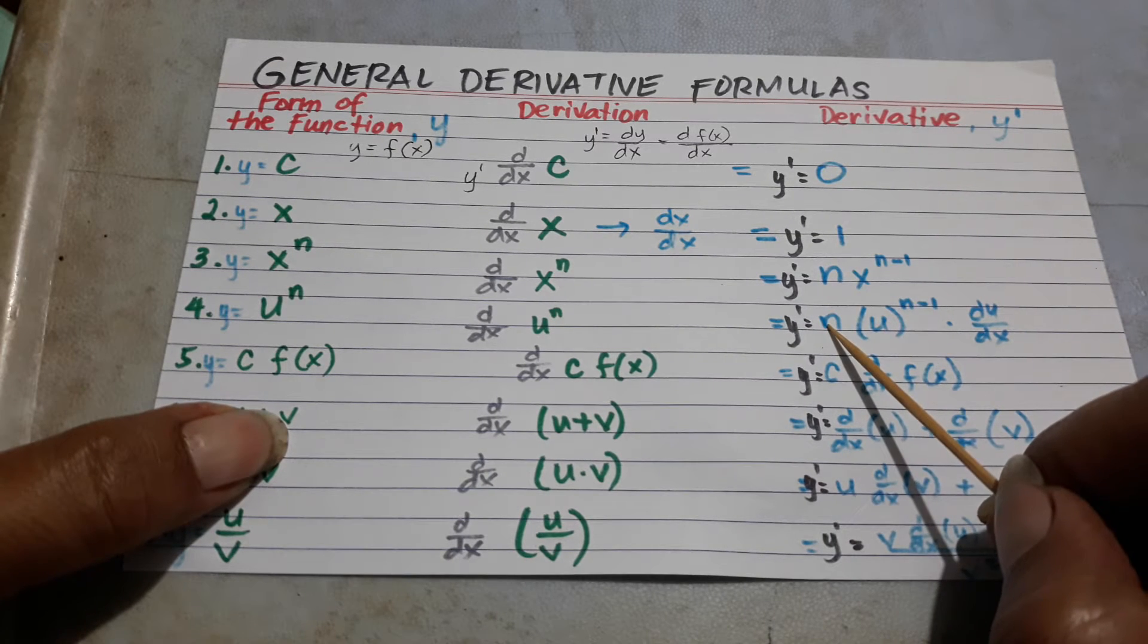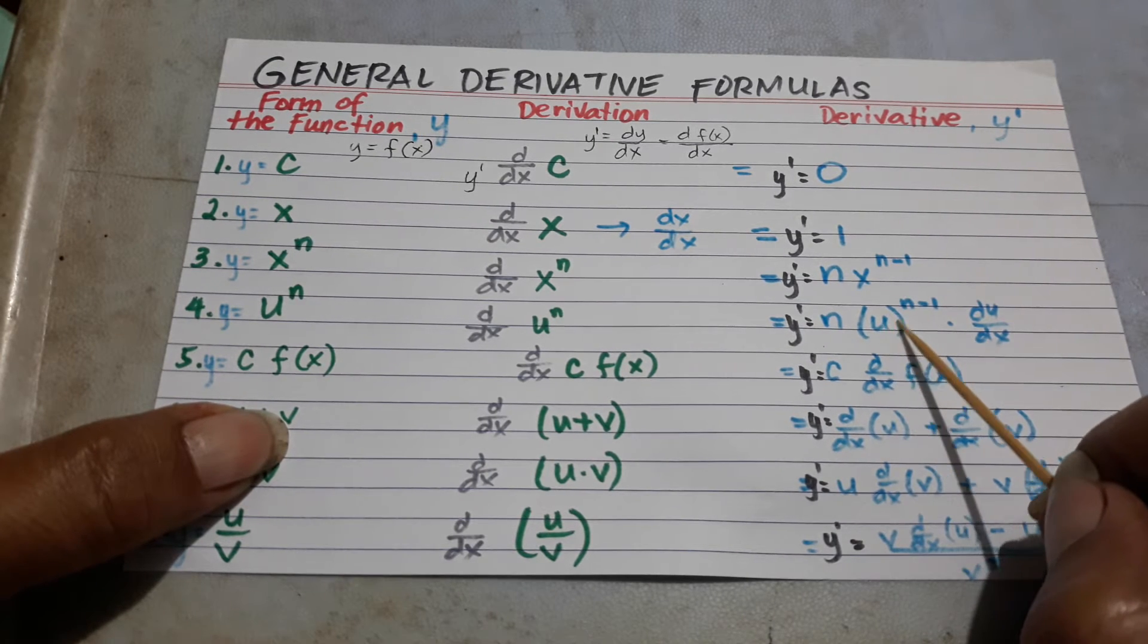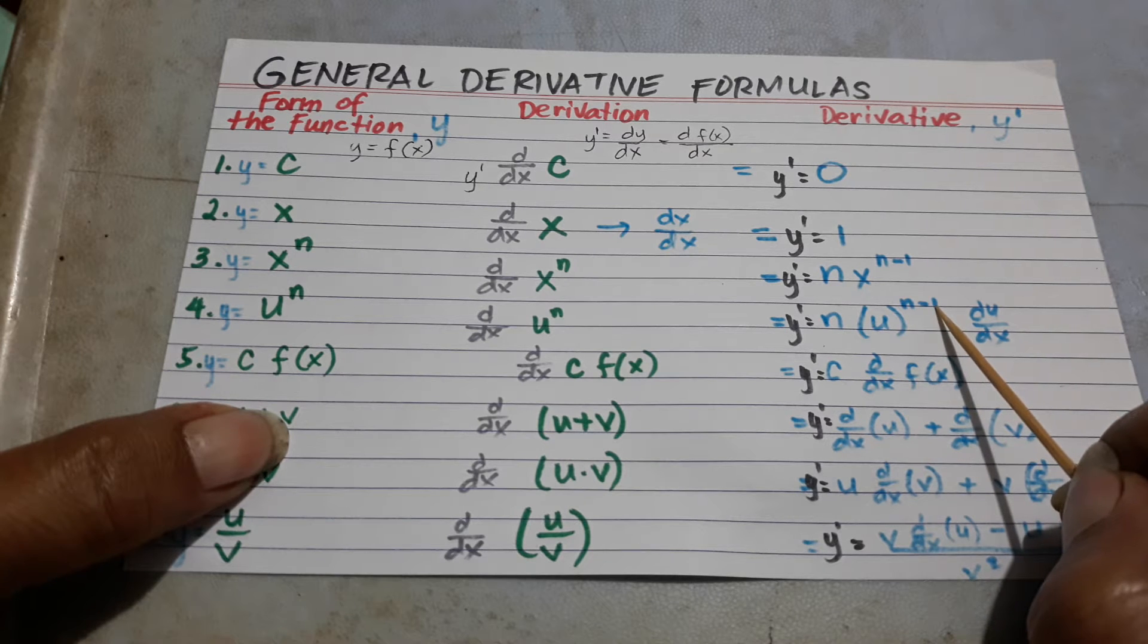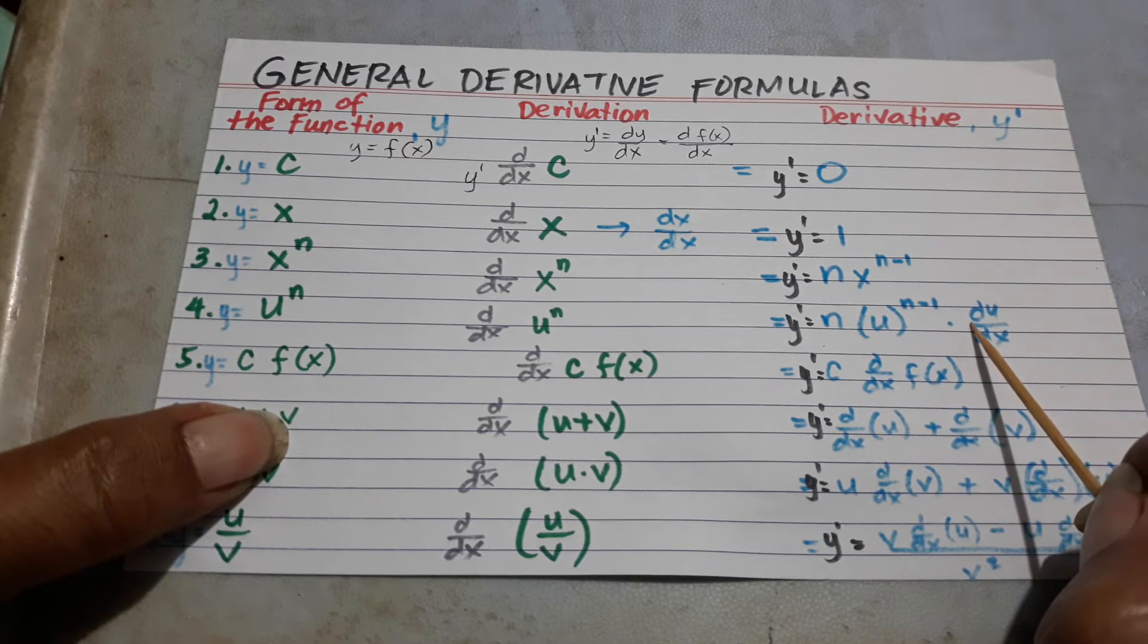So, that will be n times u raised to the n minus 1 times derivative of u.